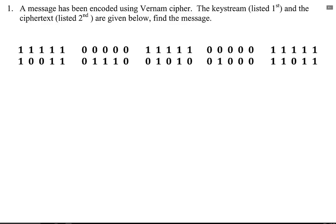In problem one, we're supposed to use the Vernam cipher to find a secret message. So we're given a keystream and ciphertext to try to decrypt.